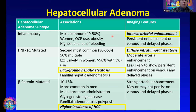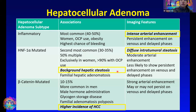The inflammatory subtype is the most common, seen mostly in women on OCPs and obese patients. It has the highest chance of bleeding, and on imaging we expect to see intense arterial enhancement with persistent enhancement on venous and delayed phases. The HNF1-alpha-mutated type is the second most common, and we may expect to see multiple adenomas. It is also usually seen only in women associated with OCPs. We may also see background hepatic steatosis, and the lesion itself may exhibit diffuse intratumoral steatosis — features that help distinguish this type from other adenomas. We see moderate arterial enhancement, and these are less likely to show persistent enhancement on venous and delayed phases.